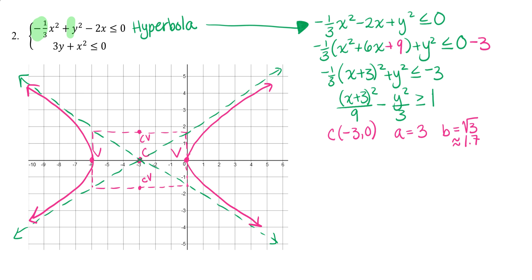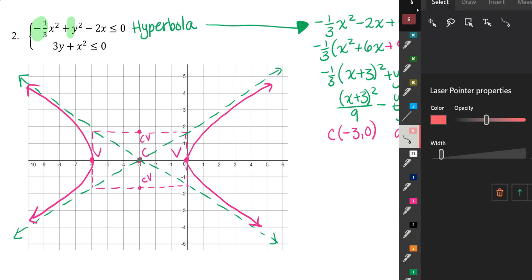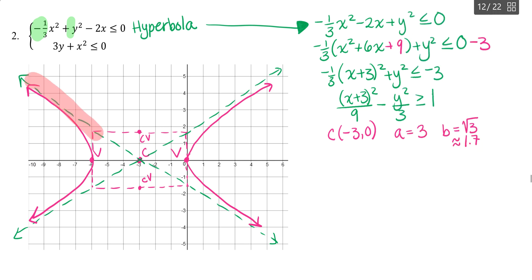Last piece, since it's an inequality, we need to determine where we want to shade. We have two options for shading. Our shading will either be here inside the two branches, so that's one option, or the shading will be outside the two branches. So those are your two options for shading. And so you want to choose a point and test a point. You can choose any point, inside or outside, as long as it's not on the branches of the hyperbola.